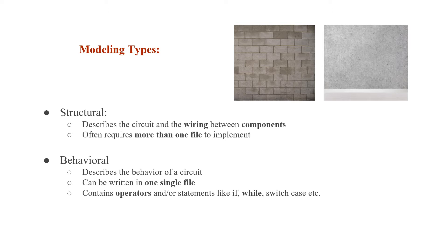Behavioral modeling contains operators such as the AND operator or the OR operator, and statements like the FOR loop, while loop, the IF statement, the switch case, etc. A key keyword to identify structural modeling code is the word 'component' — if you see that in your code, it means it's a structural model. For behavioral modeling, if you see operators like AND or OR used directly, or statements like while, it means it's behavioral modeling.